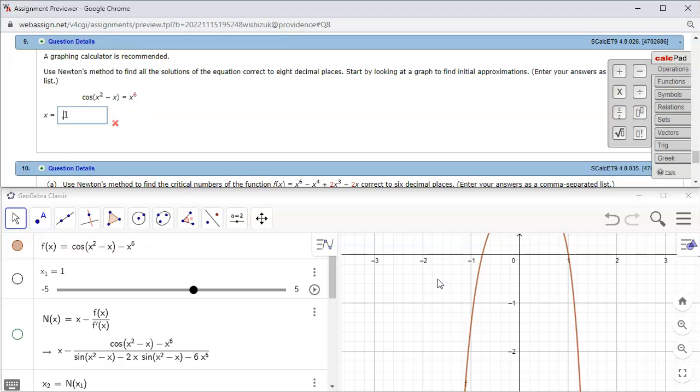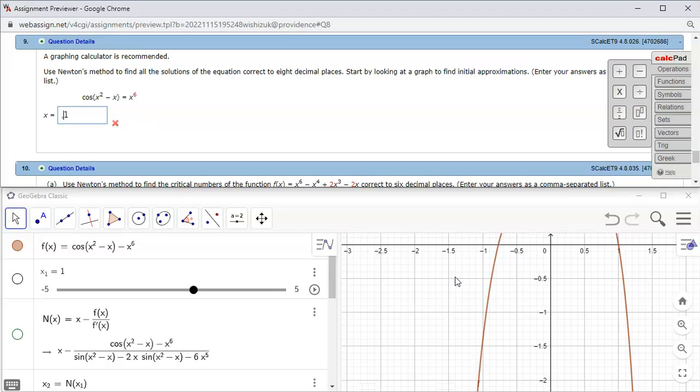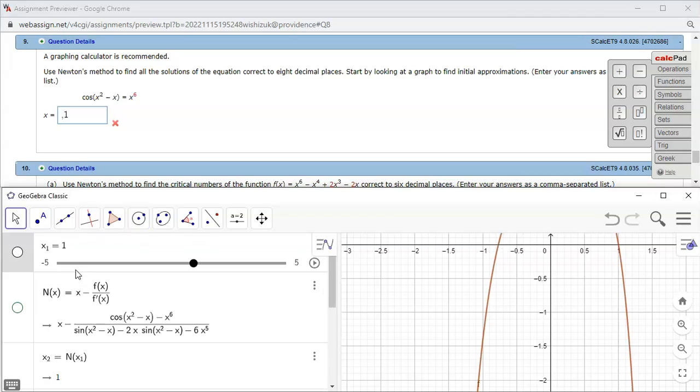Then the negative one would be, let's see, it's around negative 0.6, almost 6. So I'm going to try negative 0.6 and then hit enter.